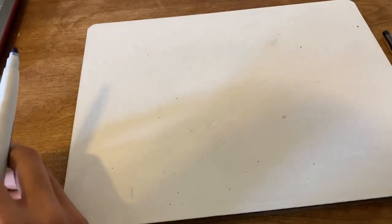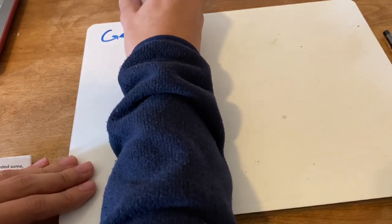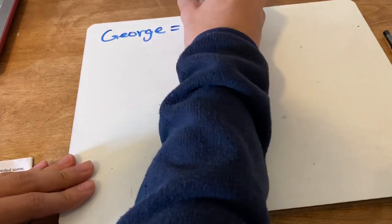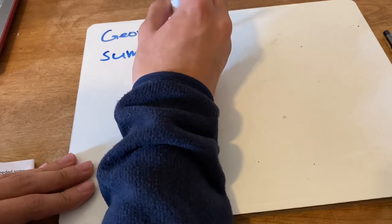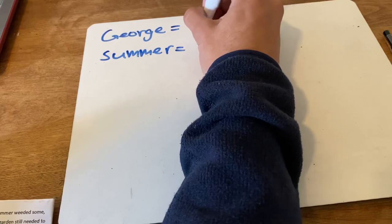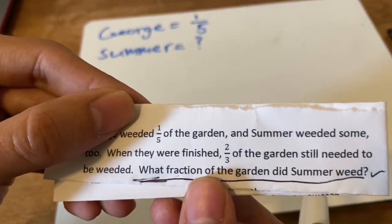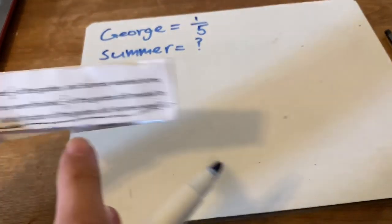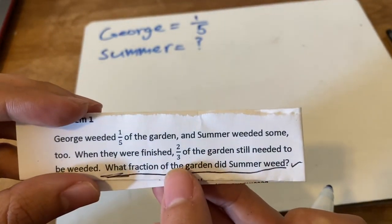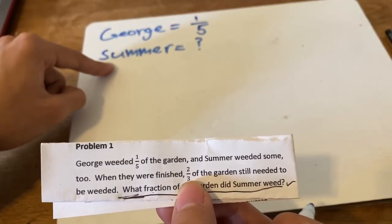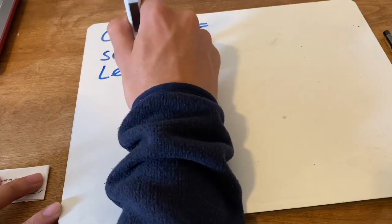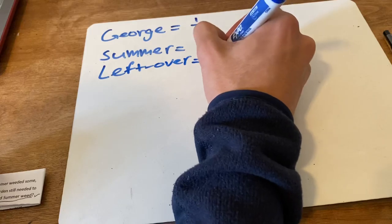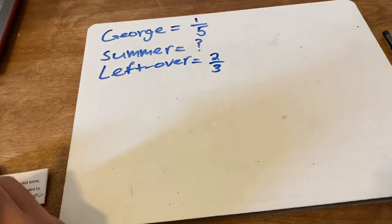Let me organize my facts. George weeded one-fifth of the garden: one over five. Summer — we don't know what Summer weeded, that's what we need to solve for, so I'll put a question mark. When they were finished, two-thirds of the garden still needed to be weeded. Be careful — two over three does not tell me the total. It tells me that even after both of them weeded, there was still this much left over. So: left over, two-thirds.